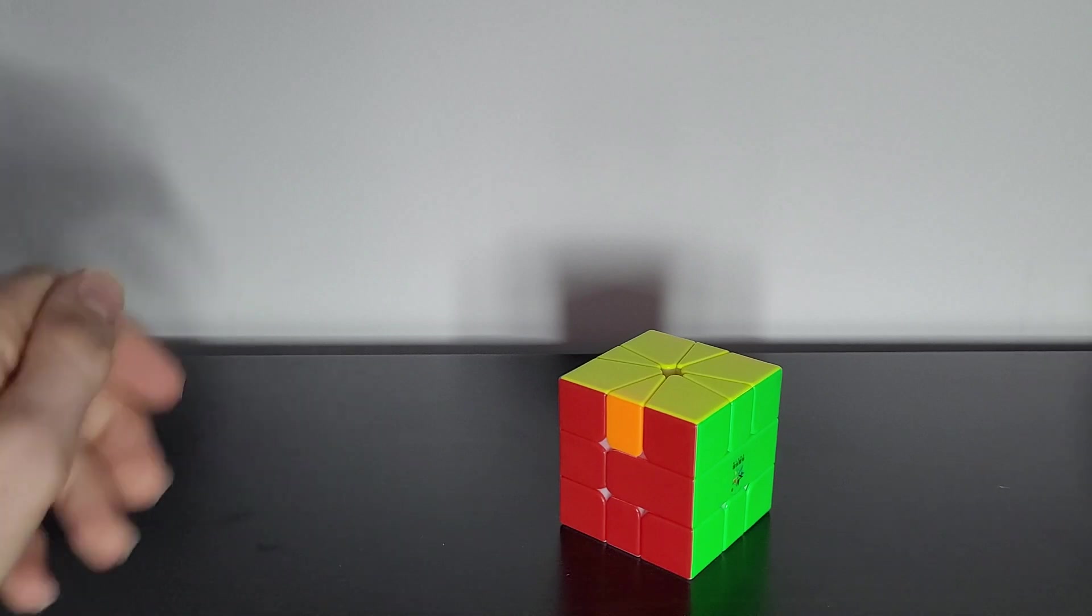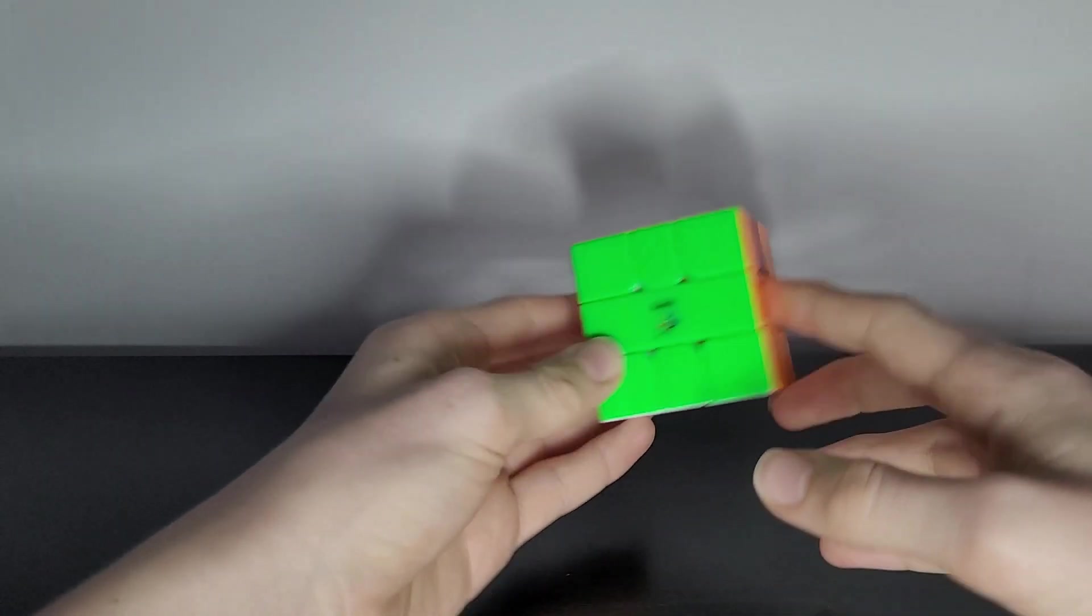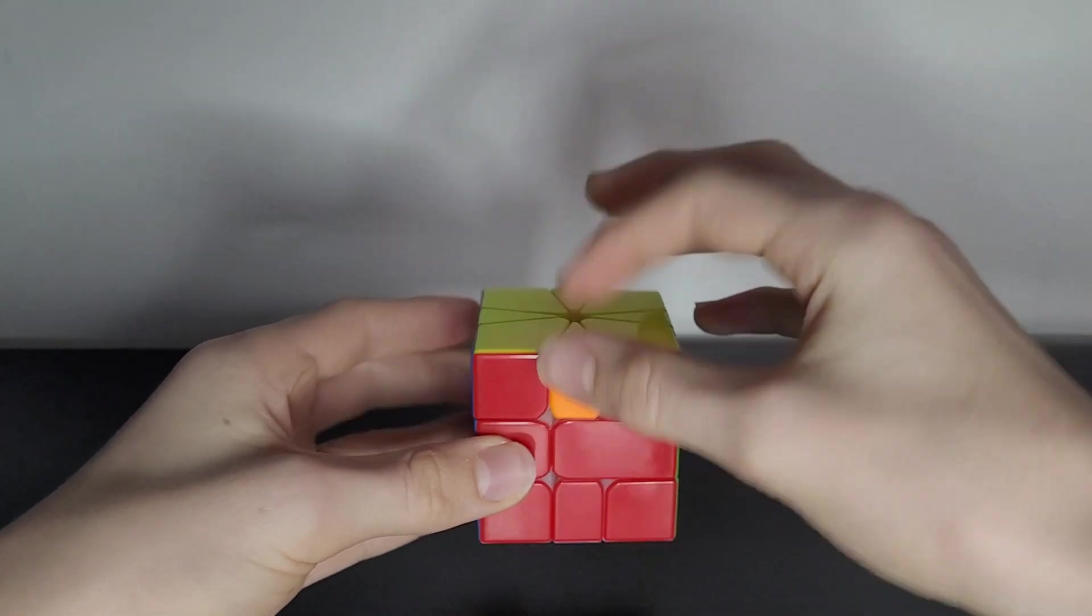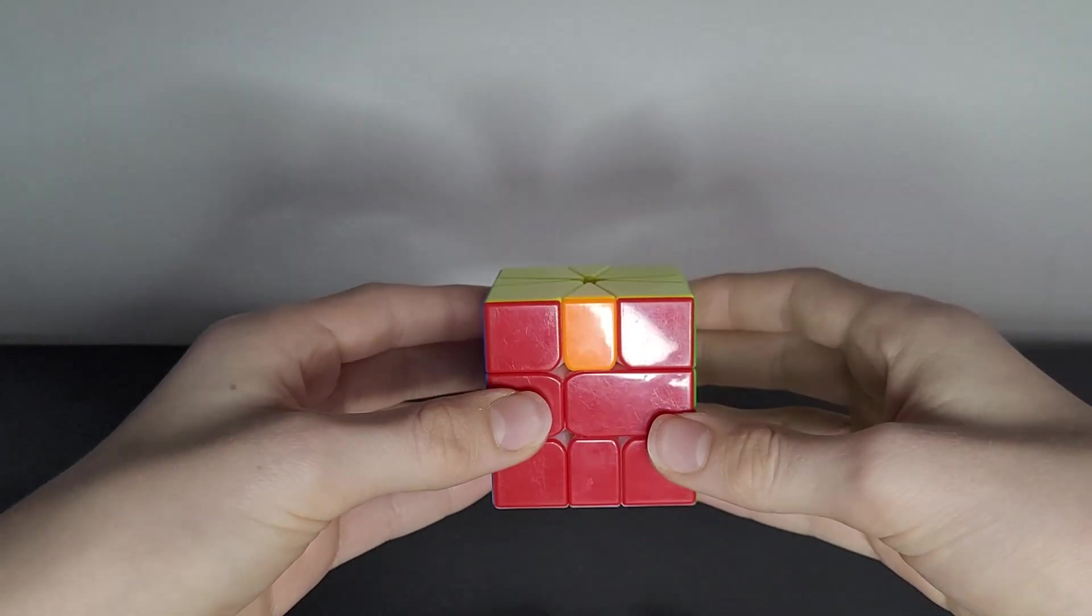But if you don't know how to recognize them, I'll be showing you how to swap these two pieces. The way to solve this case is to hold it so that the two pieces that need to be swapped are on the front and the back. Then you perform this algorithm.